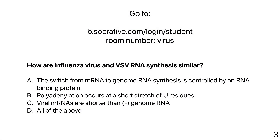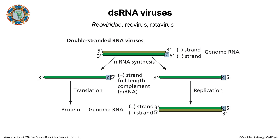The question asks how influenza virus and VSV RNA synthesis are similar. The answer is all of the above: the switch from mRNA to genome RNA is controlled by an RNA-binding protein (N protein in both cases); polyadenylation occurs at a short stretch of U residues by slippage; and the viral mRNAs are shorter than the minus-strand genome RNA.